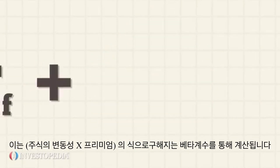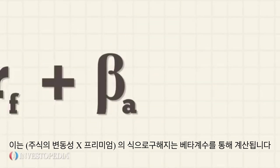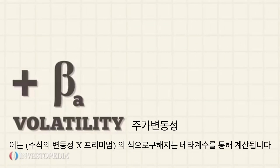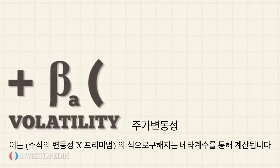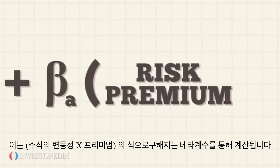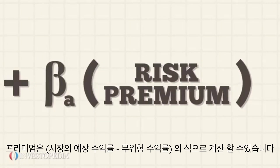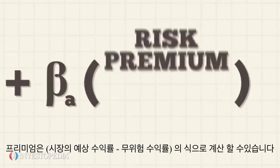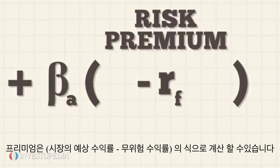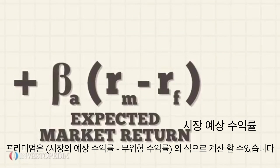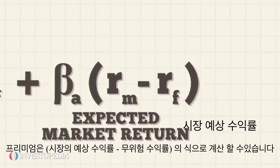This is done by taking a beta, which measures a stock's volatility, and multiplying it by its premium. The premium is calculated by subtracting the risk-free rate of return from the expected return of the market.